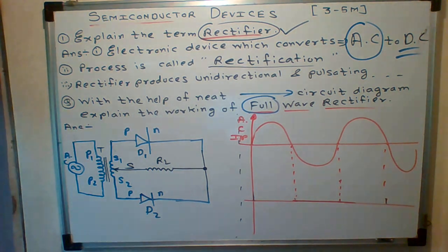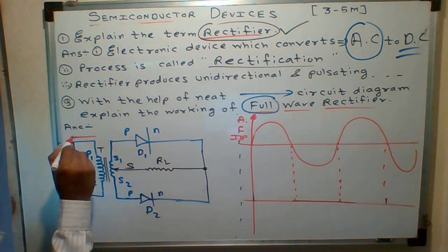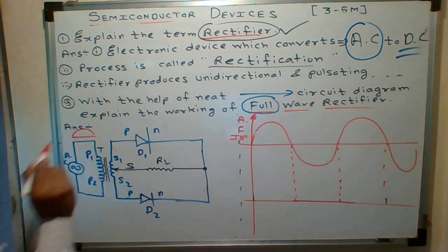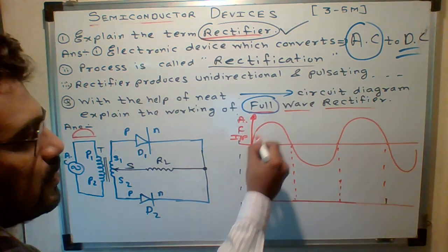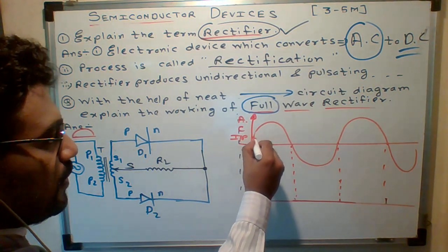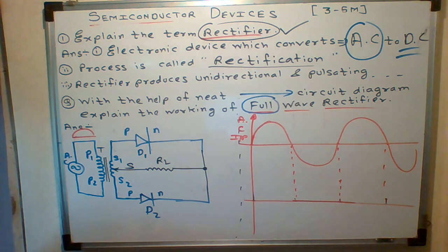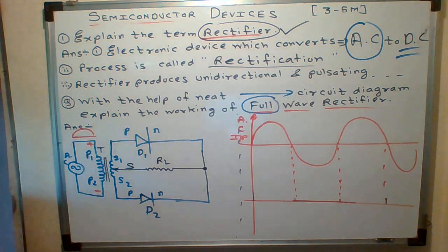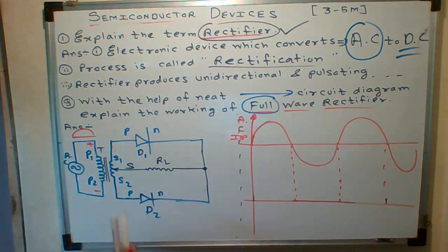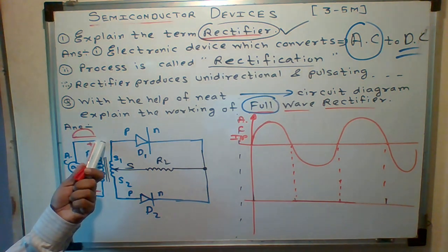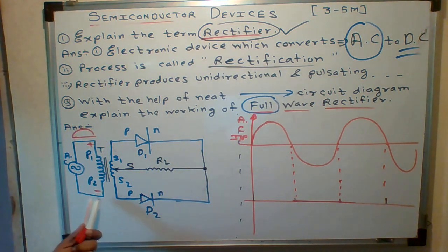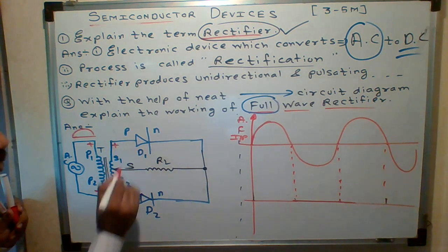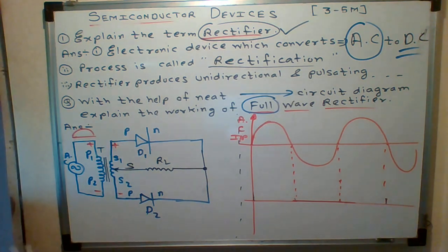During the positive half-cycle, all of you concentrate. This particular wave — this is positive, this is negative. During the positive half-cycle, this particular point will be positive and this particular point will be negative. The transformer only transfers the voltage — positive and negative.